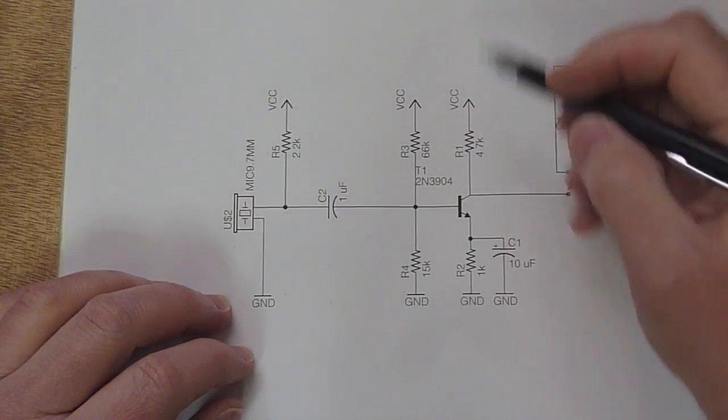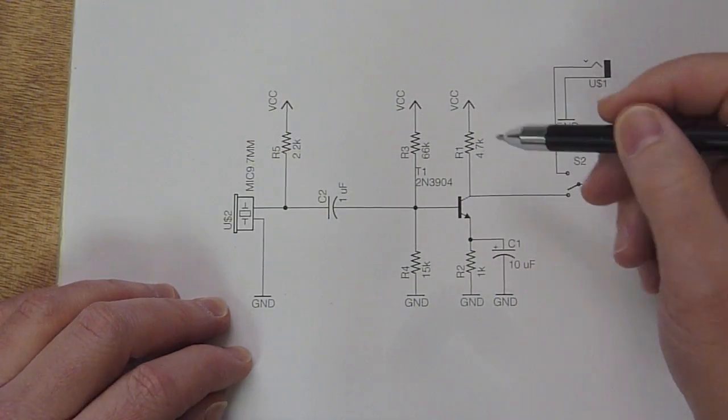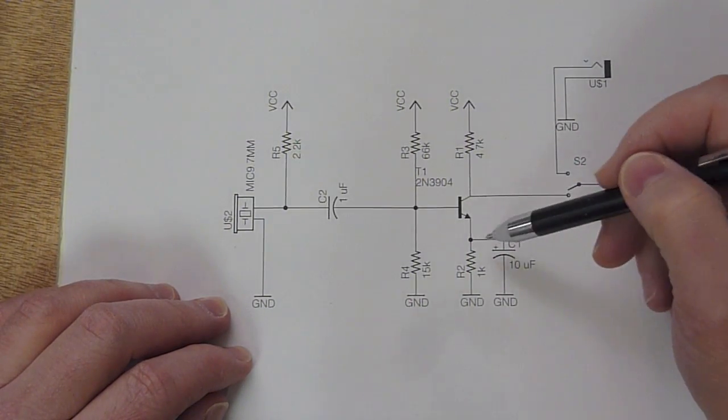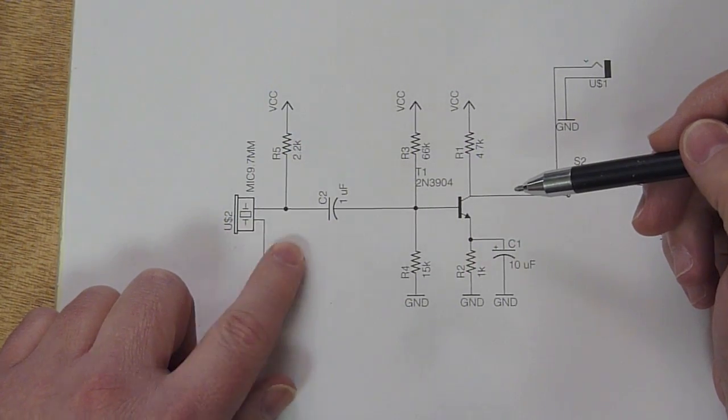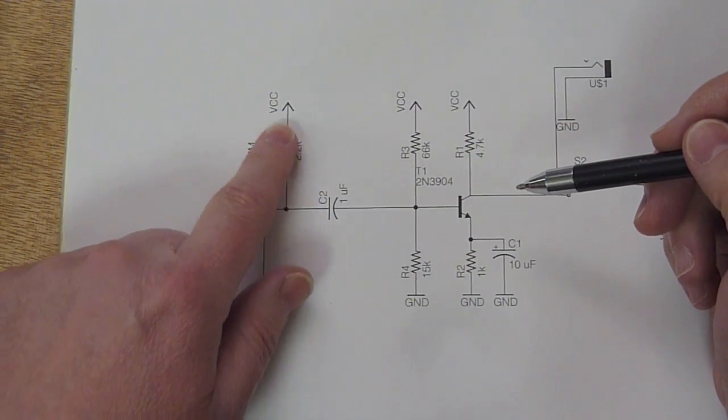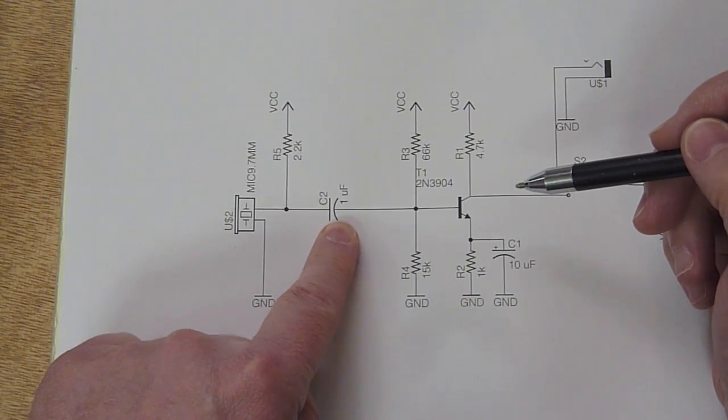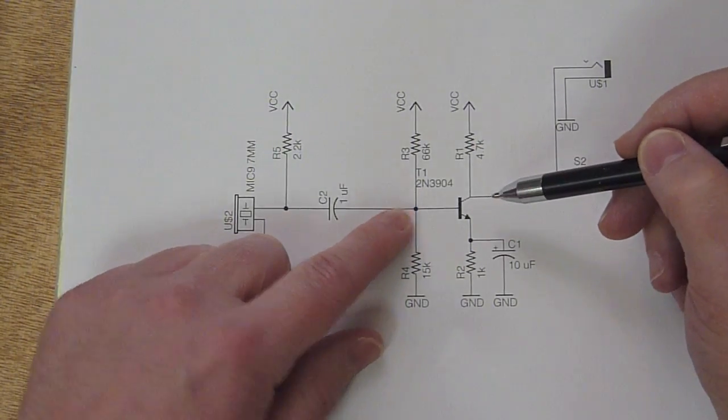We have a single NPN transistor, a 2N3904, it's classic, and it's set up as a common emitter amplifier. So the signal from the microphone, the electric microphone is biased by this 2.2K resistor, which sets the output impedance of the mic. It goes through a blocking cap, and then the signal we want to amplify ends up here at the base of the transistor.